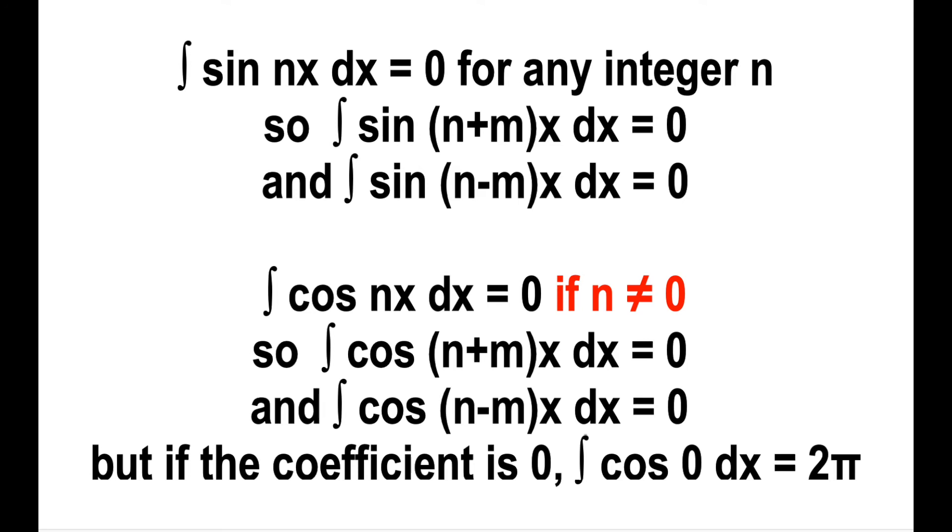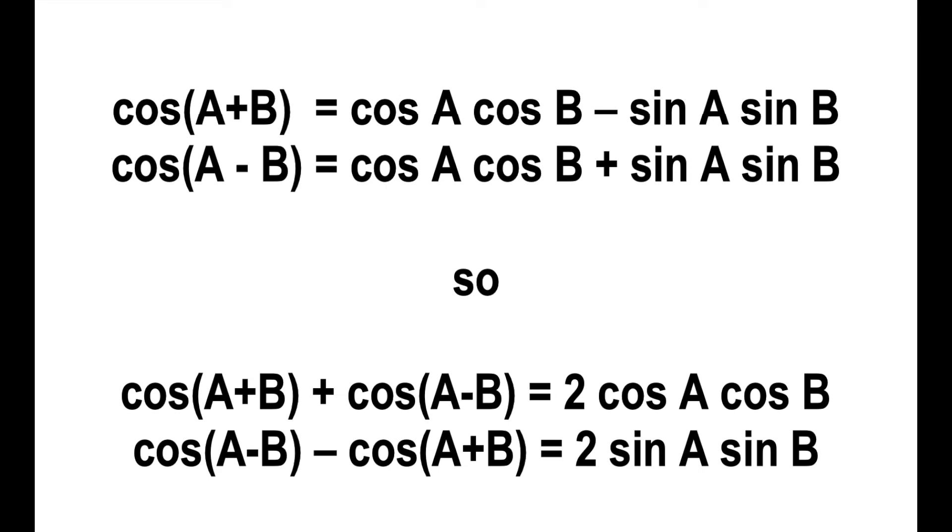Now here's where the straight trigonometry comes in. Here are the formulas for the cosine of a sum or difference. If you add those two expressions together, you actually get 2 cos a cos b. And if you subtract the two expressions, you get 2 sin a sin b. These are the expressions we're getting in the Fourier integrals.